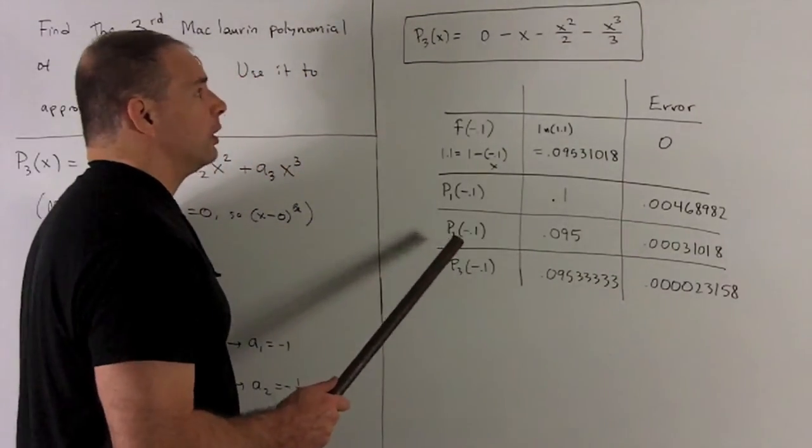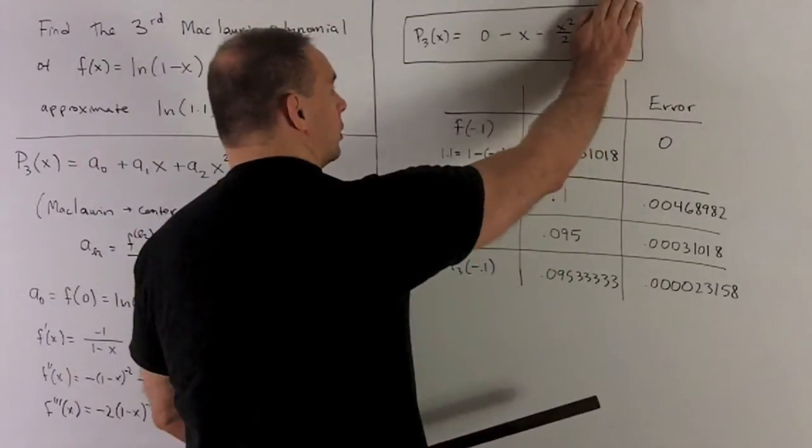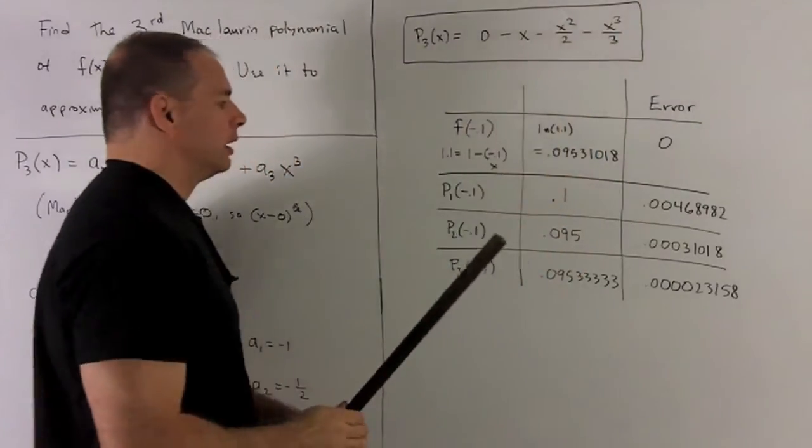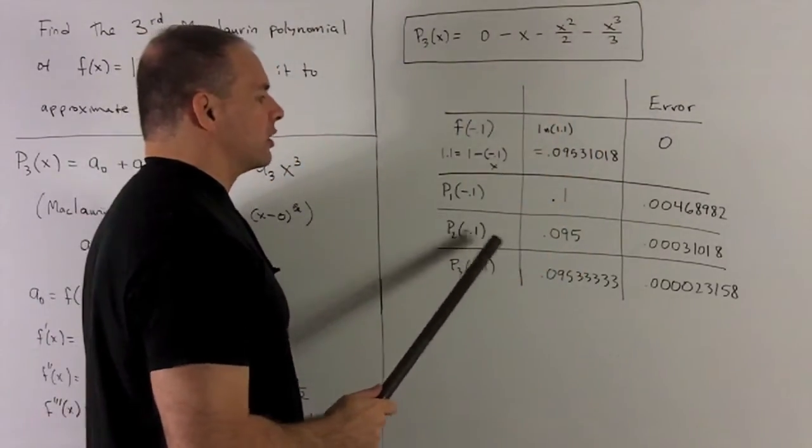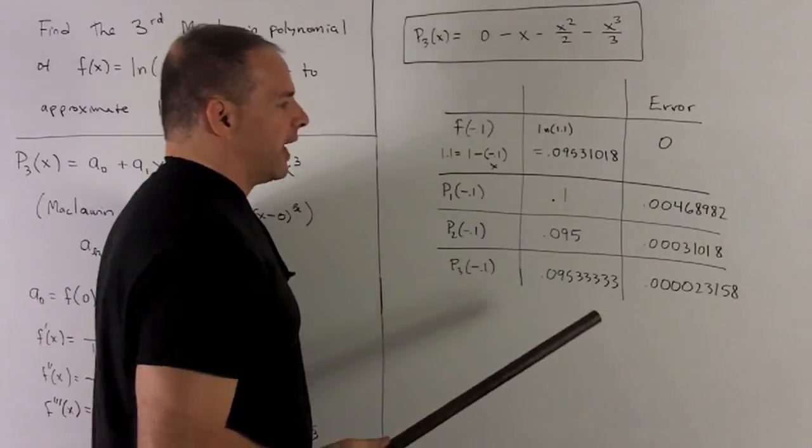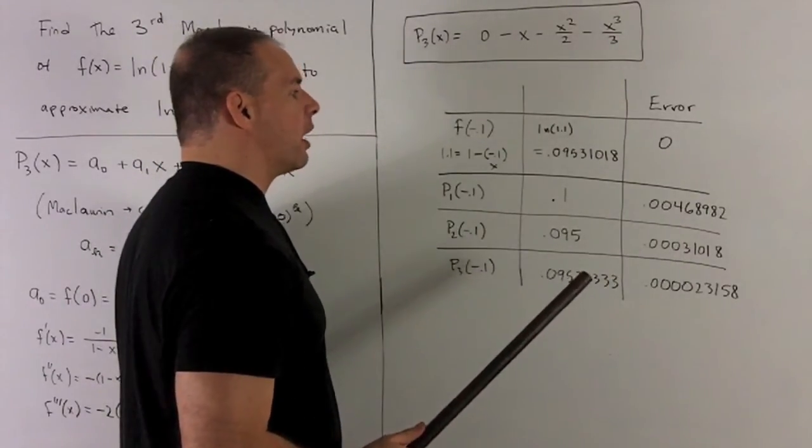If I go to P_2, so that's just using everything but the cubic term, put my minus 0.1 in, that gets me 0.095, and that'll get us to the fourth decimal place in the error.